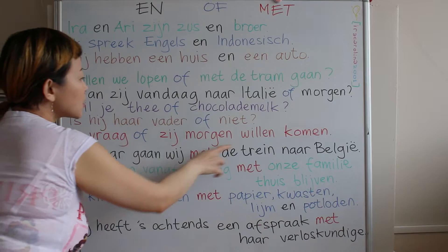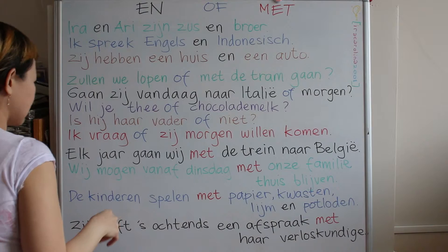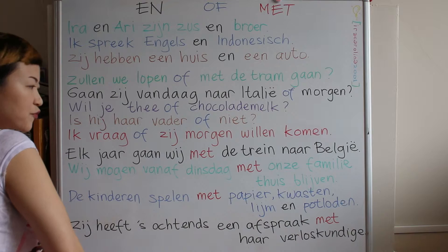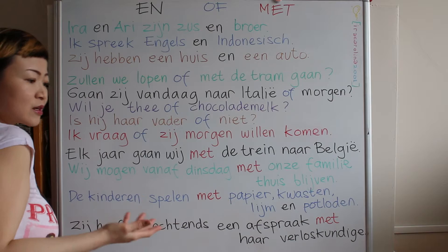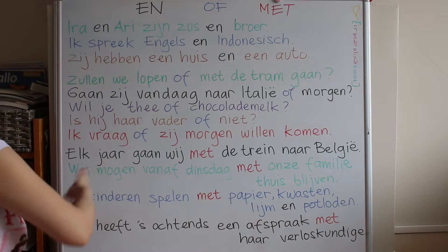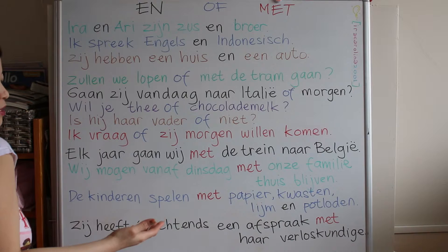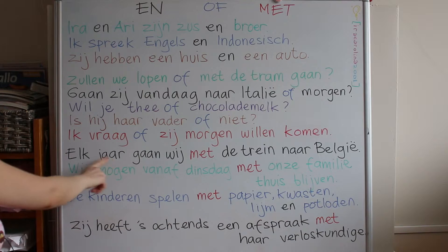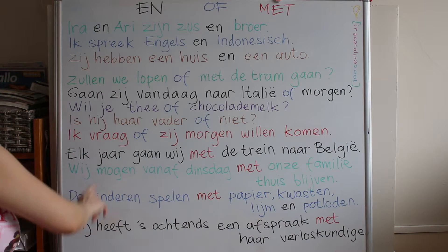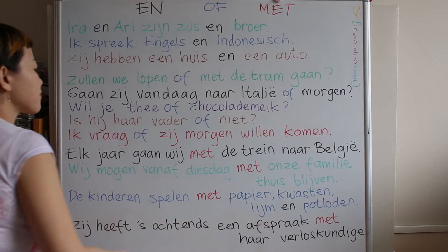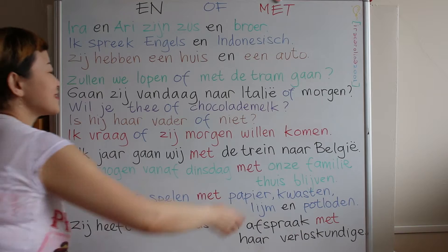And now, 'met' — with. 'Elke' is used for 'every', but for 'jaar' (year) we use 'elk' instead of 'elke'. So: 'Elk jaar gaan wij met de trein naar België' — every year we go with the train to Belgium.